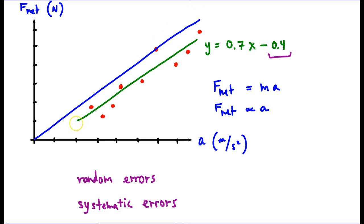So if you extrapolate this green line, this best fit line back, if you go all the way back, it would hit the axis, the y-axis, at negative 0.4. So says the equation.